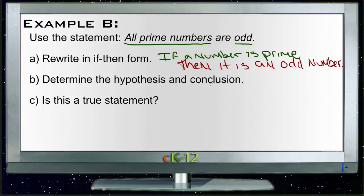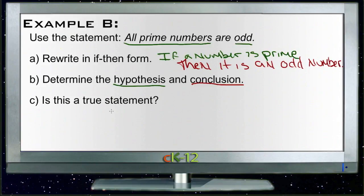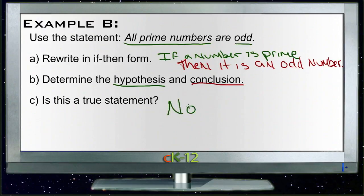Now we have our 'if' and our 'then,' which makes it easy to identify the hypothesis and conclusion. The hypothesis, shown in green, is 'if a number is prime,' and the conclusion, shown in red, is 'then it is an odd number.' Is this a true statement? Well, are all prime numbers odd? Almost — the only prime number that's not odd is two, because it can only be divided by itself and one. Any other prime number would have to be odd, because if it's even it would be divisible by two as well. So this is not a true statement, but it's pretty close.